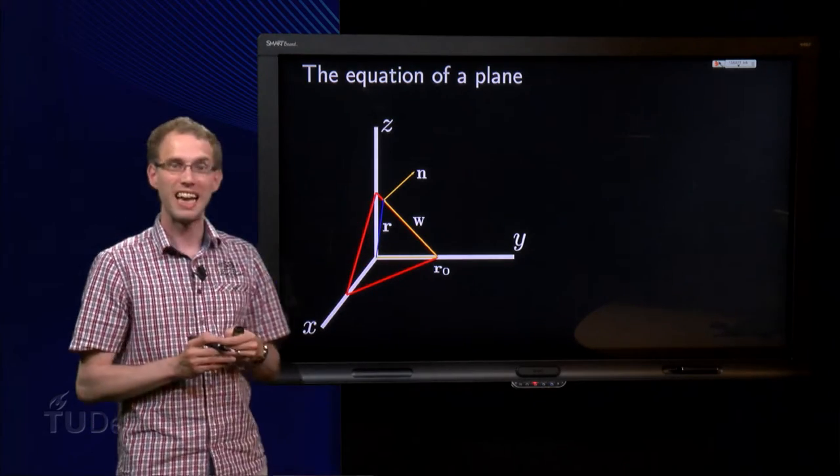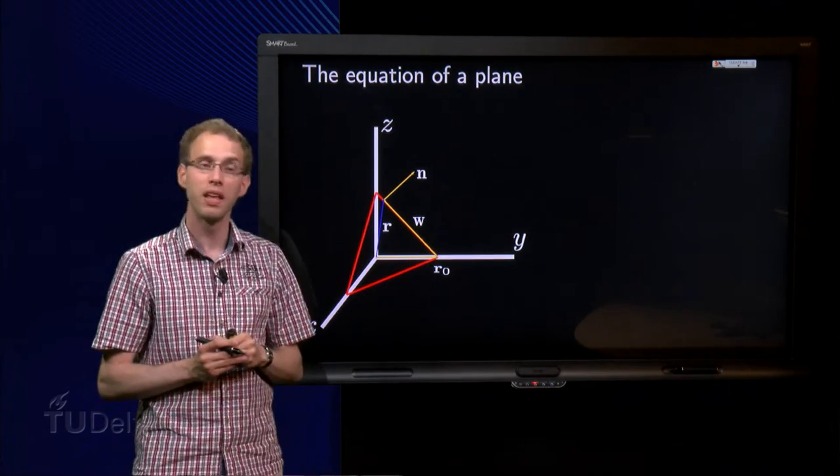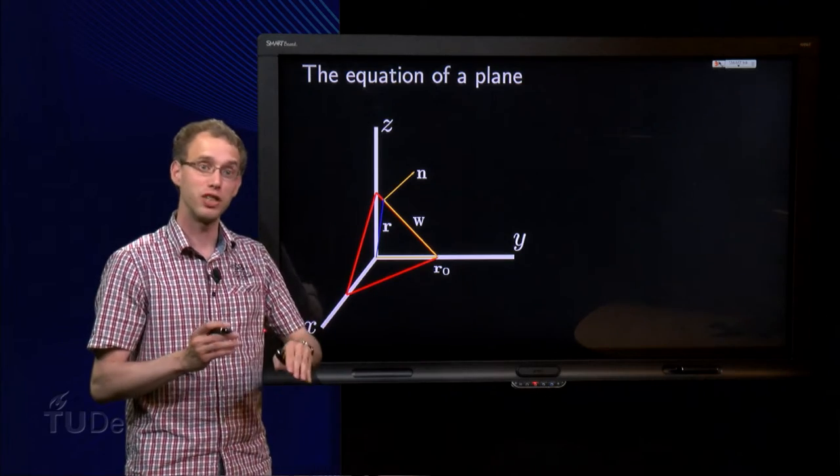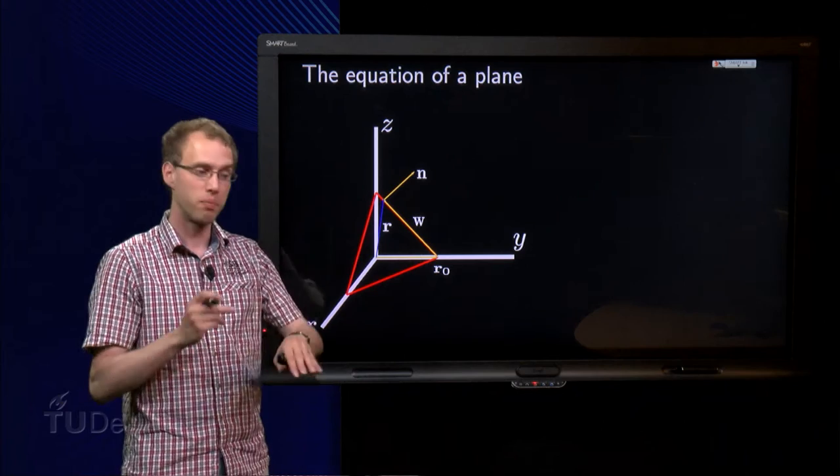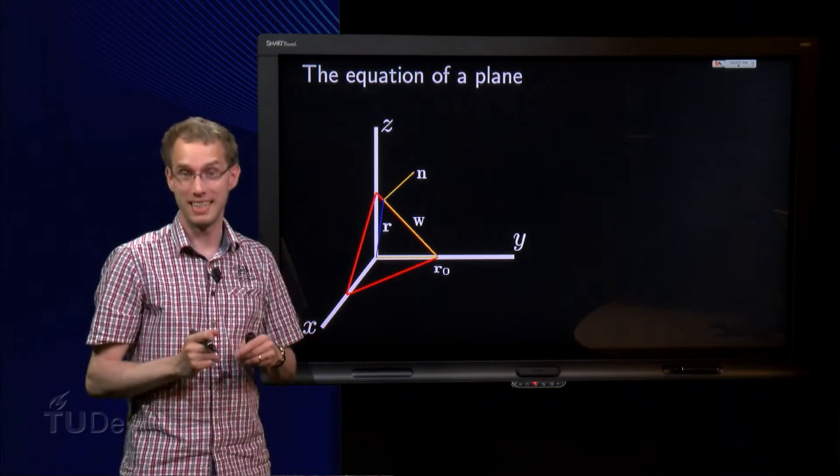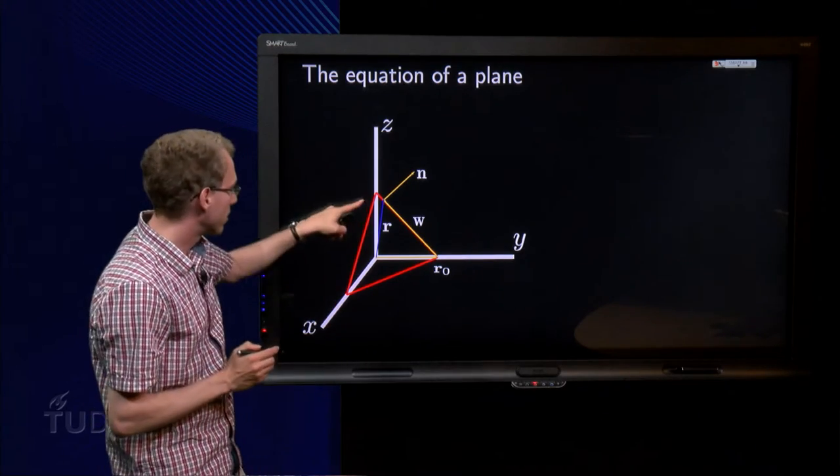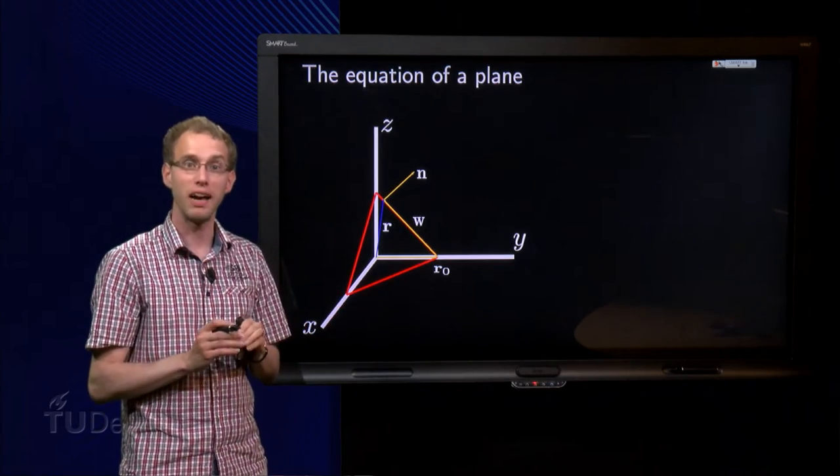Then the vector w is connecting r0 and r, and the vector n is the normal of the plane. It is the vector which is orthogonal on the plane. It doesn't matter where you place it, because wherever you are in the plane, the normal is always pointing in the same direction. In this case I drew it right on top of r, but that is not needed, you could place it somewhere else.